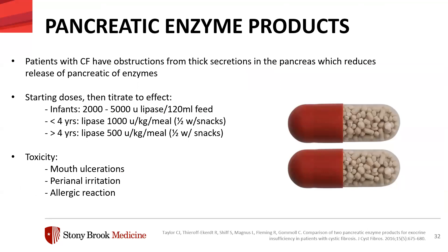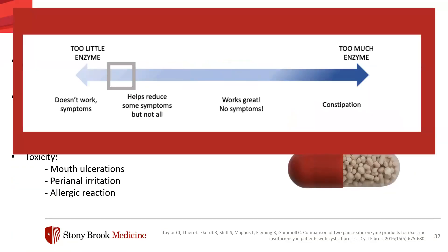For pancreatic enzyme products, patients with CF have obstructions from thick secretions in the pancreas that reduce the release of pancreatic enzymes. Between 85–90% of individuals with cystic fibrosis have pancreatic insufficiency. Dosing starts with a recommended starting dose and adjustments are made based on patient response. A patient on too low a dose may present with abdominal pain, gas, bloating, or distension. Someone on too high a dose could have constipation and toxicities such as irritation, pain, or itching. Dosing is really based on patient symptoms and adjusting from there.